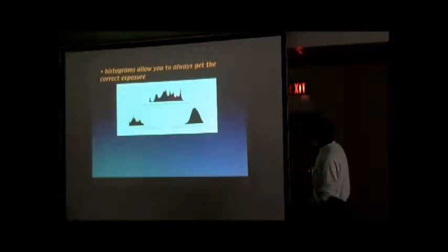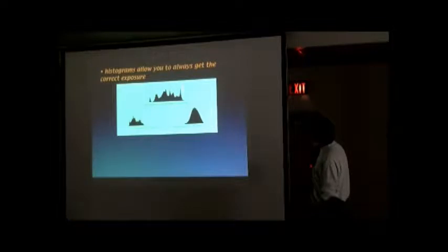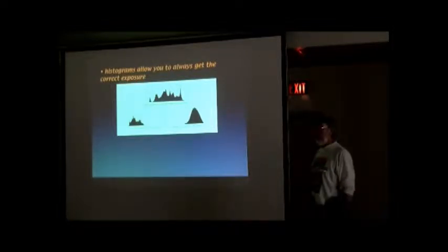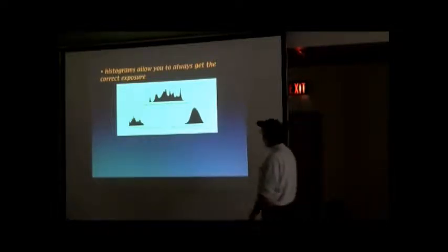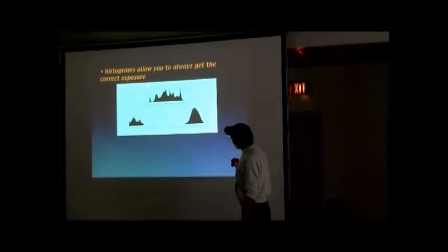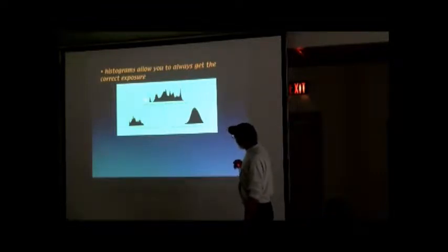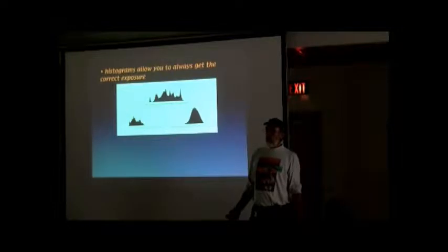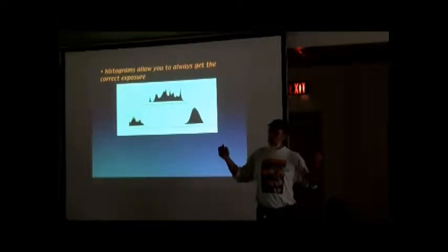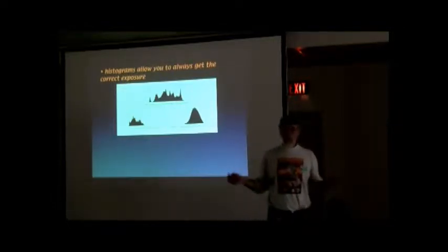Here's a box. This is dark, this is black, and this is white. This line is black. Everything else are gradations of gray. If you take a picture and none of these touches either edge, you've basically got an acceptable exposure.